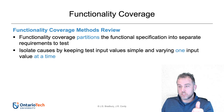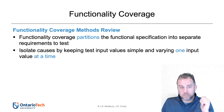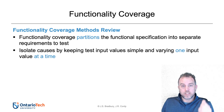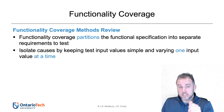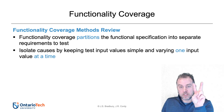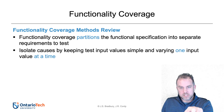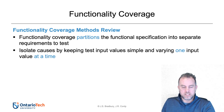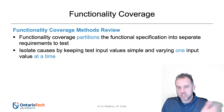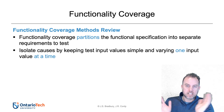To recap functionality coverage: the system for creating tests is, first, partition the spec into separate independent requirements. For each independent requirement, create test cases that cover it. Isolate causes by keeping test input values simple and varying only one at a time. For the X and Y example, if the first test case is (1,1), the next is (0,1), then (0,0), then (1,0) — that allows you to change one value at a time. That's functionality coverage.